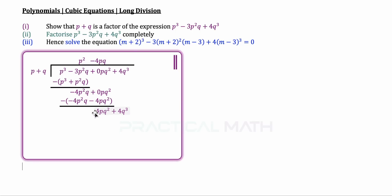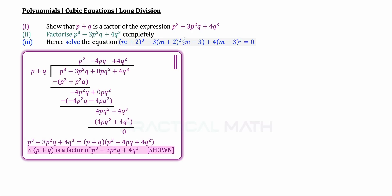The next term to eliminate is 4pq squared. We multiply by 4q squared: 4q squared multiplied by p gives 4pq squared, and 4q squared multiplied by q gives 4q cubed. Taking these two terms minus these two terms gives a remainder of zero. Since the remainder is zero, we can rewrite this as: p cubed minus 3p squared q plus 4q cubed equals p plus q multiplied by the quotient p squared minus 4pq plus 4q squared. This proves that p plus q is a factor.